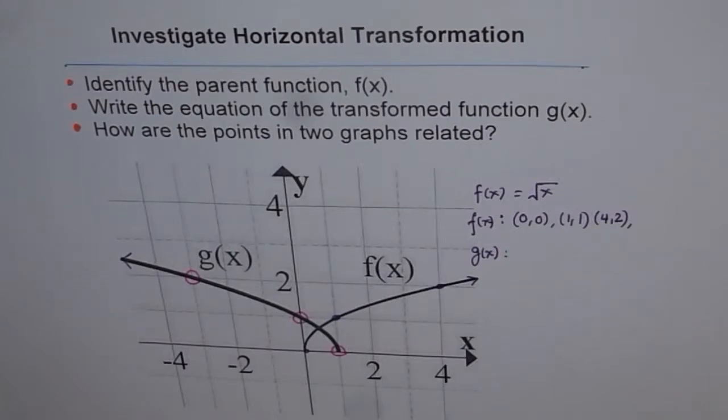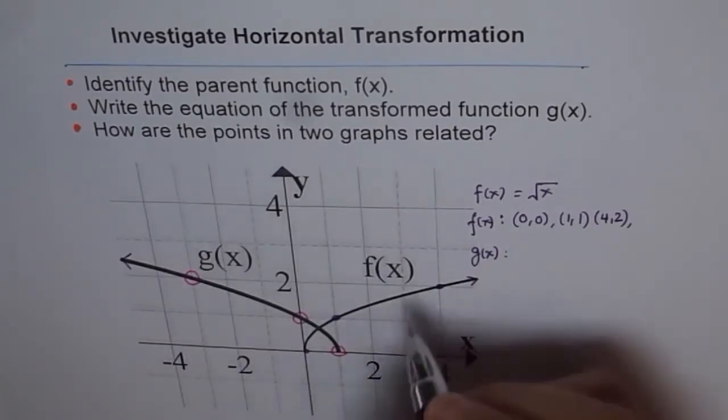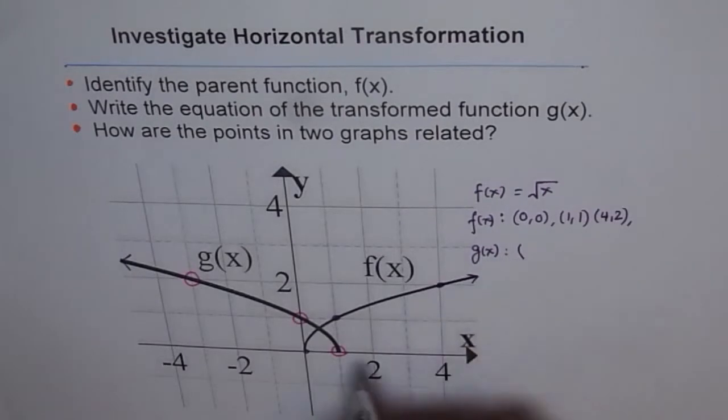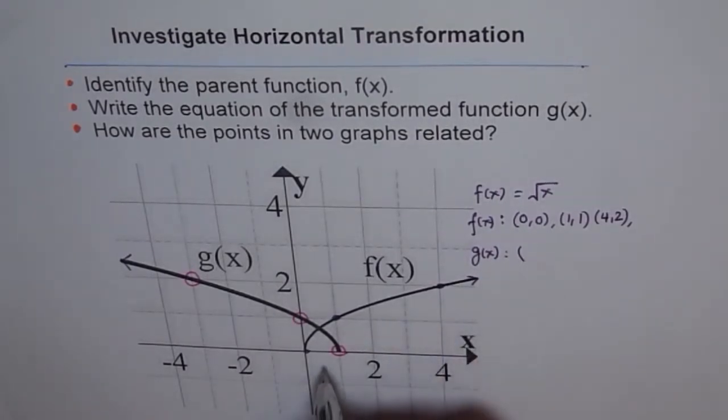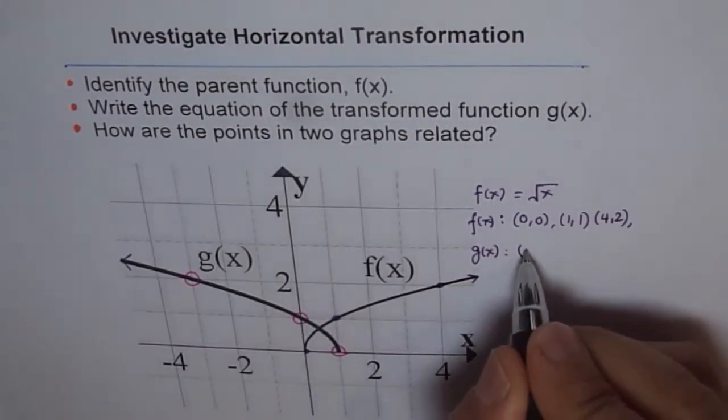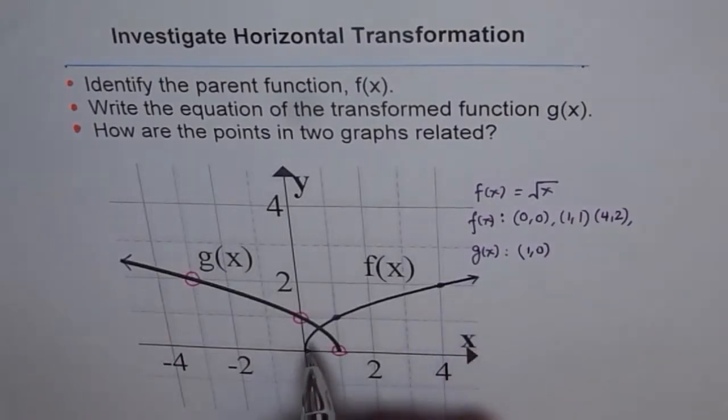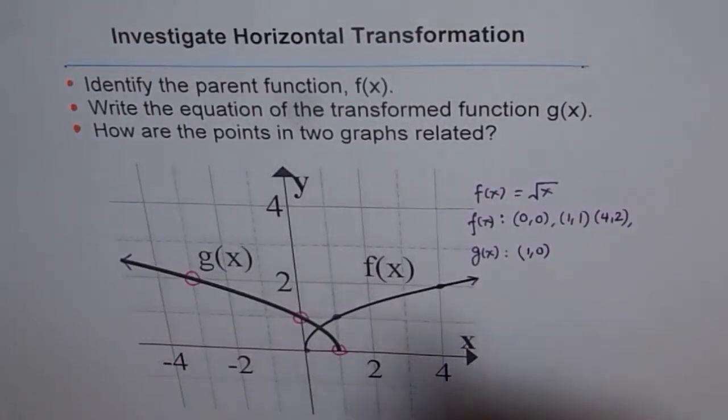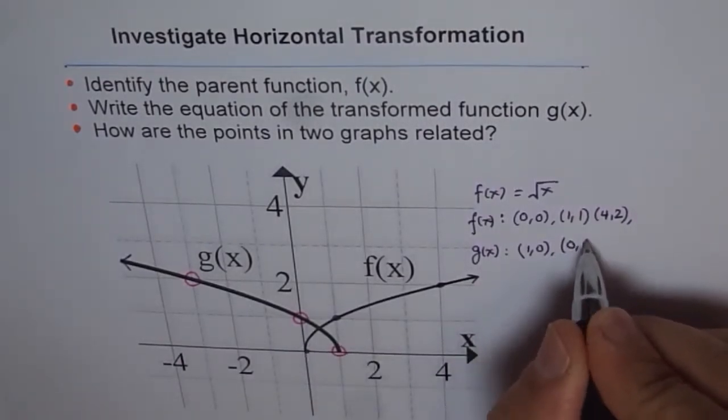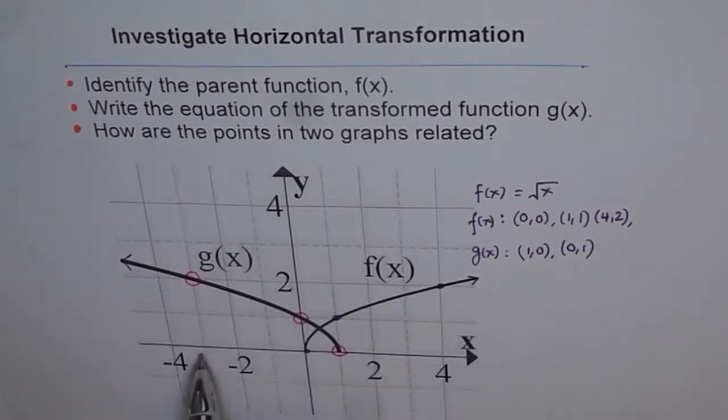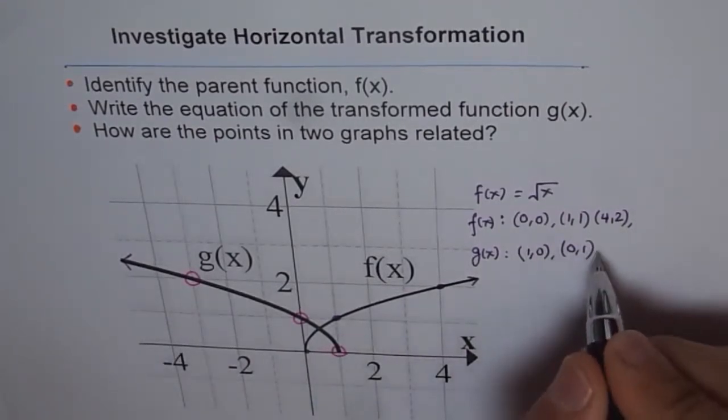So given these points, what we can do is, we can write them down and see what these points are. First, we see x equals to 1, so (1,0). And then at x equals to 0, the value is 1. And here at (-3), we have value of 2.